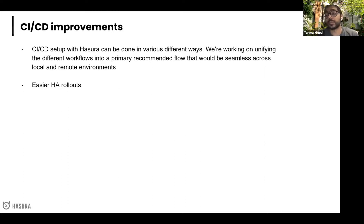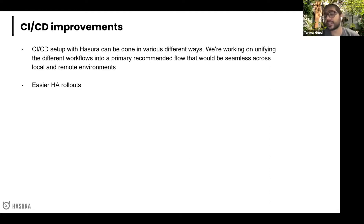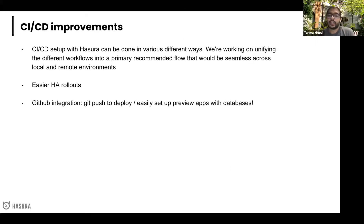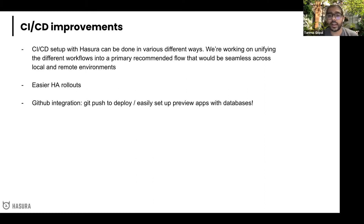Specifically, with the metadata separation release, high availability rollouts — which are currently a bit challenging to configure — will become drastically easier. We'll also have a nice GitHub integration so you can do git-push-to-deploy from a main branch, release branch, or even from PRs with a GitHub Action. Once that primary recommended flow is in place, there are already a ton of great community contributions in this space, and helping unify that will be very helpful.